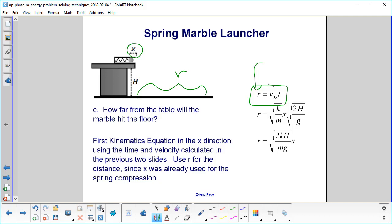We substitute in our initial velocity in the x direction, which we found earlier, and the time before it hits the ground. Once it hits the ground, that's its maximum range, giving us the square root of 2kh over mg times x.